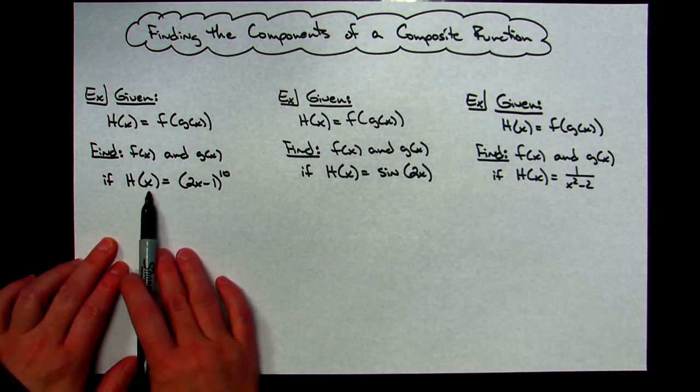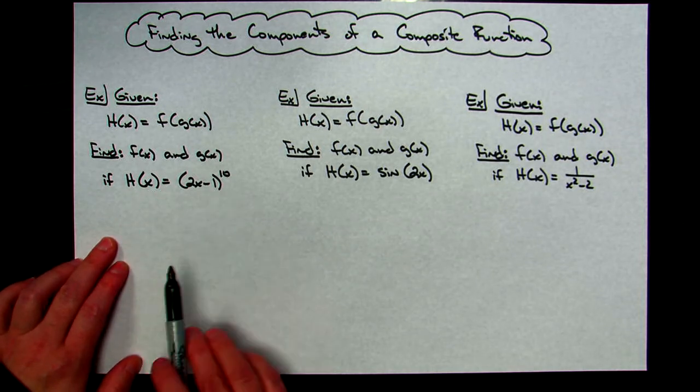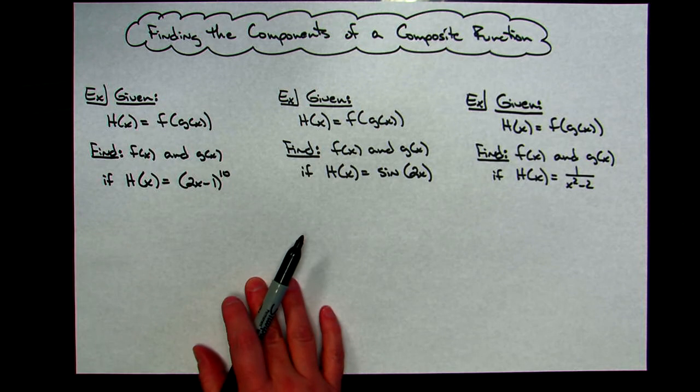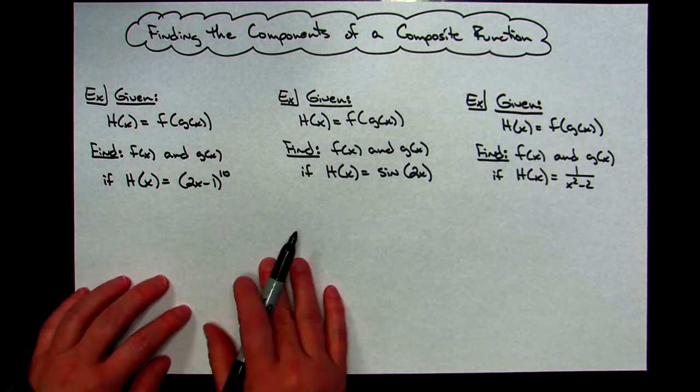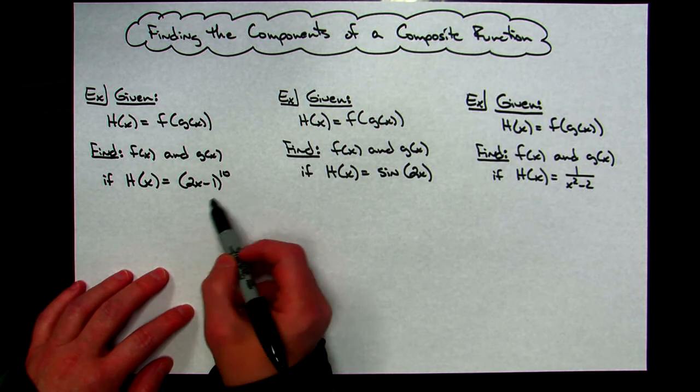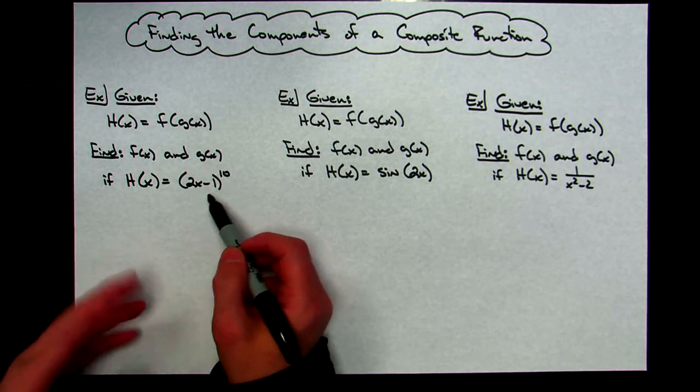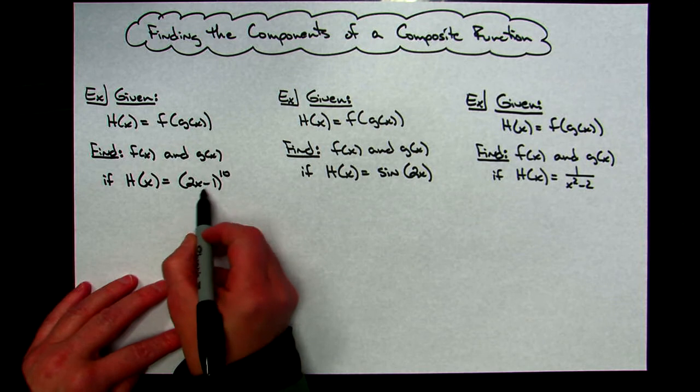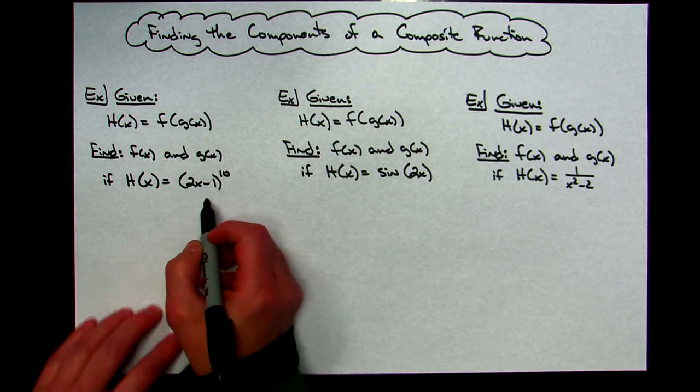Here's my composite function: h of x is equal to 2x minus 1 raised to the tenth power. Now this is sometimes hard to teach - some people will just see it and some people struggle a little bit with it. But if I'm looking at this, I would ask yourself where is the inside part of this function? To me, the inside of this function is this 2x minus 1.